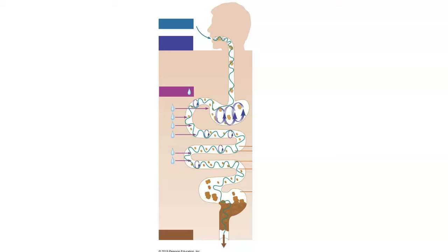The gastrointestinal tract, or GI tract, is basically a muscular tube that travels through the body from the mouth to the anus, carrying food which we process in this tract, extract the nutrients into our blood, and then eliminate the substances that we can't use.